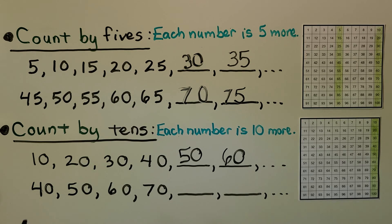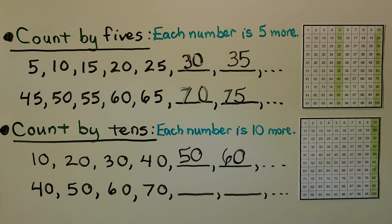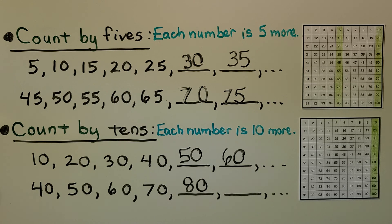We can start counting by tens from any number. Here we have 40, 50, 60, 70 — do you know what comes next? If you said 80, you're correct. The pattern: 40, 50, 60, 70, 80 — what would go here? It would be 90.